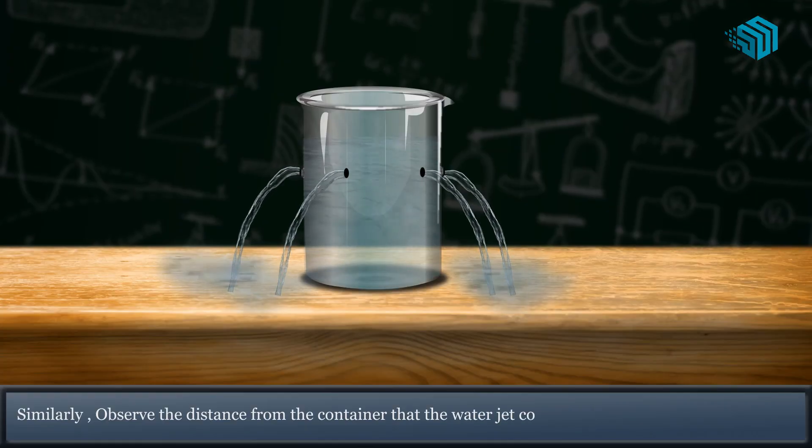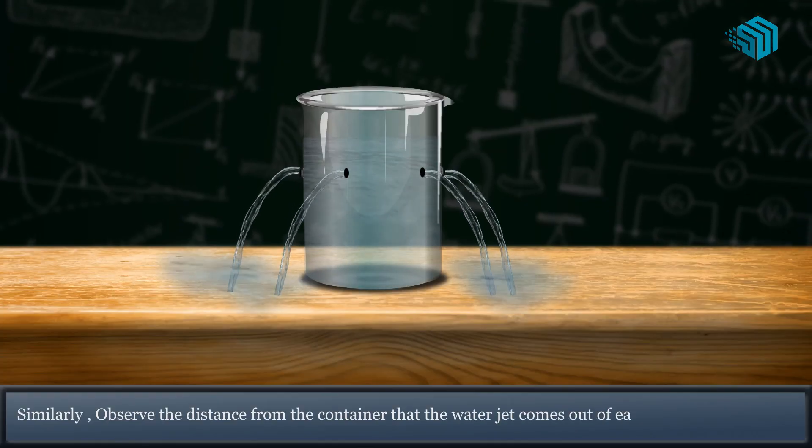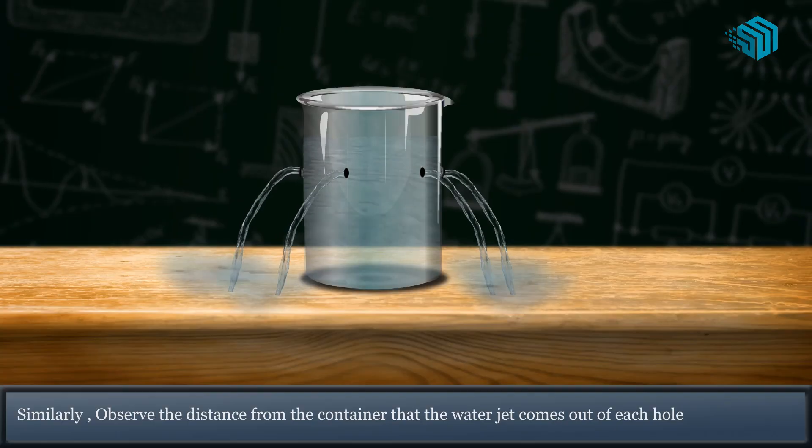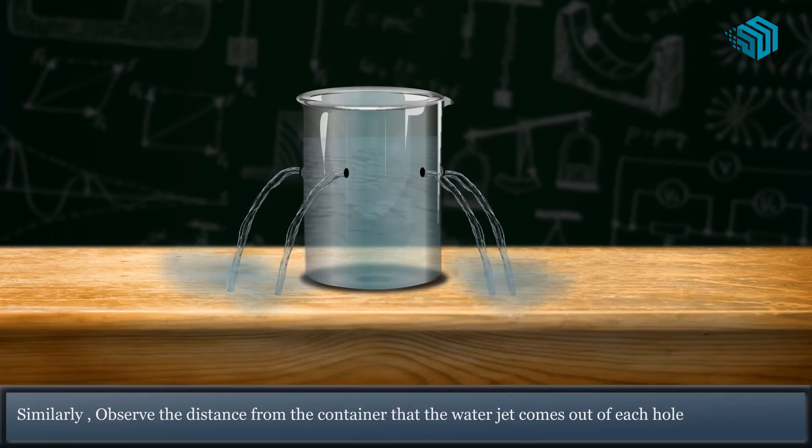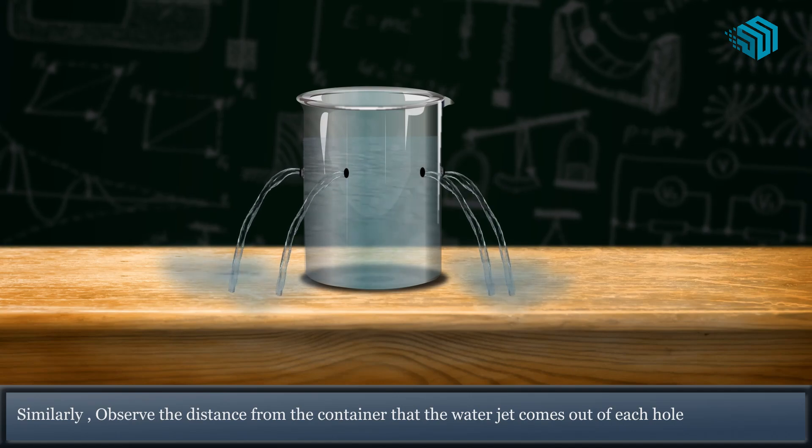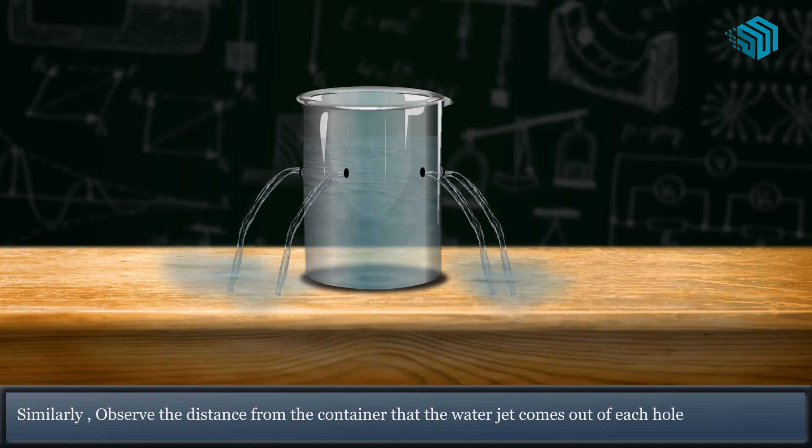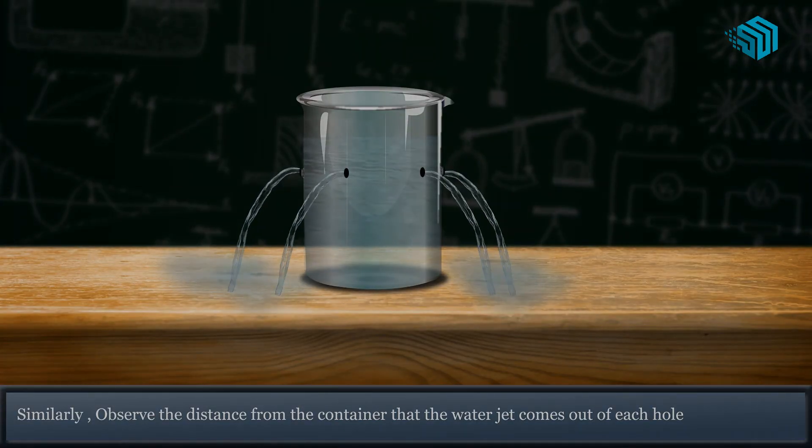Fill the container with water. Observe the distance from the container that the water jet comes out from each hole. We get to observe that the water jet from all the holes come out at the same pressure and falls at the same distance from the container.